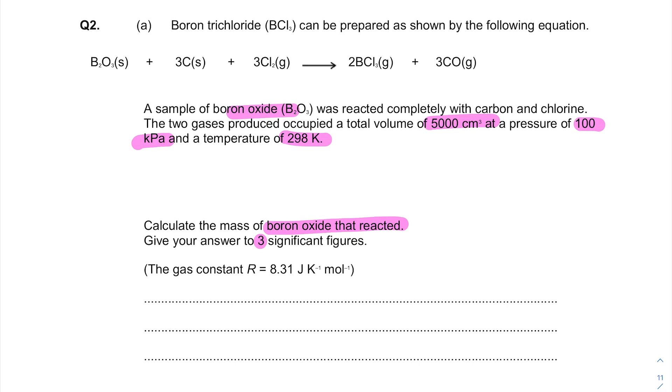We're going to use the ideal gas equation to work out the number of moles present in the products. So remember PV equals nRT. Our pressure is 100 kPa, so we need to convert that into pascals. To convert cm³ to m³, you need to do times 10⁻⁶.